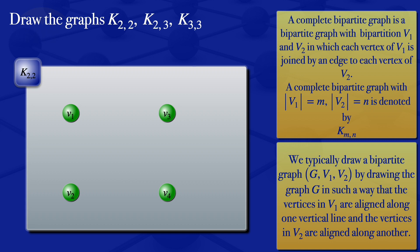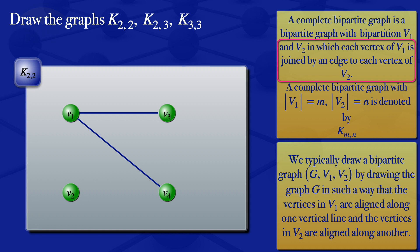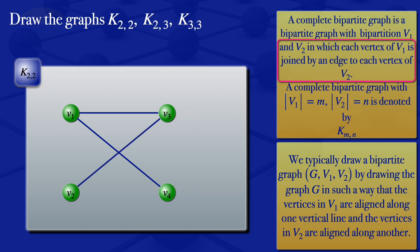We now apply the condition for a complete bipartite graph: each vertex of V1 is joined by an edge to each vertex of V2. Starting with vertex V1, I draw an edge between V1 and V3, then V1 and V4. Then moving to vertex V2, I join V2 to each vertex in the second subset: V2 with V3 and V2 with V4. So we have each vertex of subset V1 joined by an edge to each vertex of subset V2 — that's the complete bipartite graph K2,2.